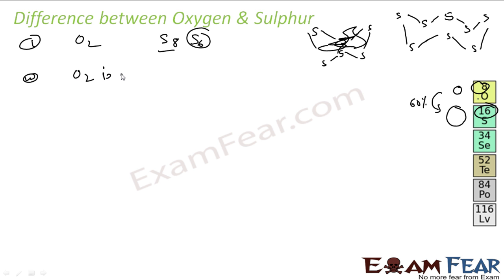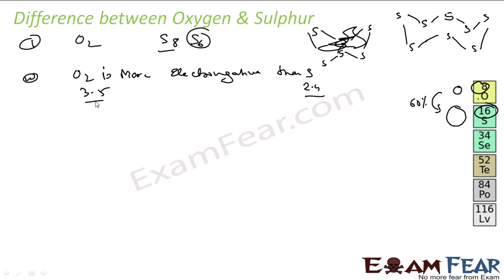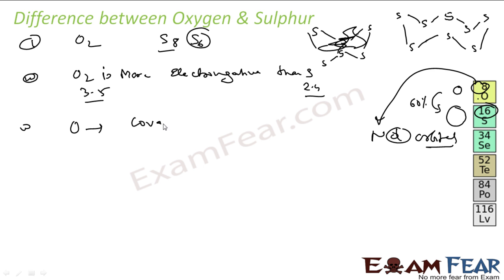Oxygen is more electronegative than sulfur. The electronegativity of oxygen is 3.5, while sulfur is about 2.4. Also, oxygen has no d-orbital, whereas sulfur has d-orbitals. Thus, oxygen's maximum covalency is 2, but for sulfur the covalency can be 6. For example, OF₆ is not possible, but SF₆ is possible.